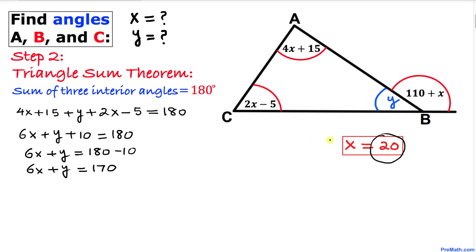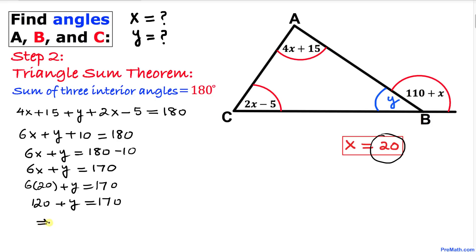We know x equals 20, so substituting: 6 times 20 plus y equals 170, giving 120 plus y equals 170. Subtracting 120 from both sides, y equals 50.